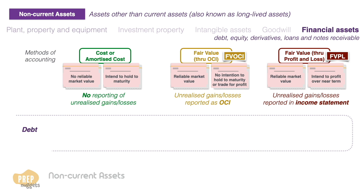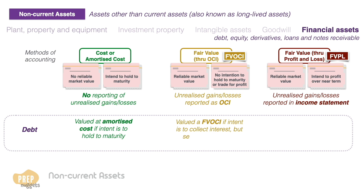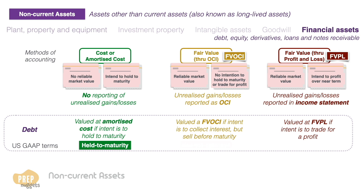Debt securities can be measured using any of the three methods depending on the intent. If the company intends to hold the debt security to maturity, it should be measured at amortized cost. If the company acquired the security with intent to collect interest but sell before maturity, it should be measured at FVOCI. And if the debt is acquired with the intent to trade for profit, it is measured at FVPL. US GAAP has specific terms for these three categories of debt investments: held to maturity, available for sale, and trading securities.